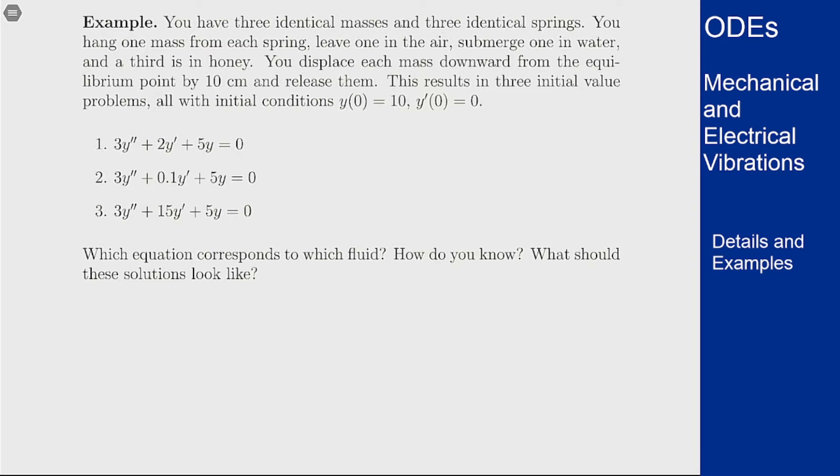For each of the masses we pull them down by 10 centimeters and release, and we're going to watch them over time. This results in three initial value problems, all of which have the same conditions: y of zero being 10, y prime of zero being zero. If we're thinking in centimeters you could also put this as 0.1 if you're thinking in meters.